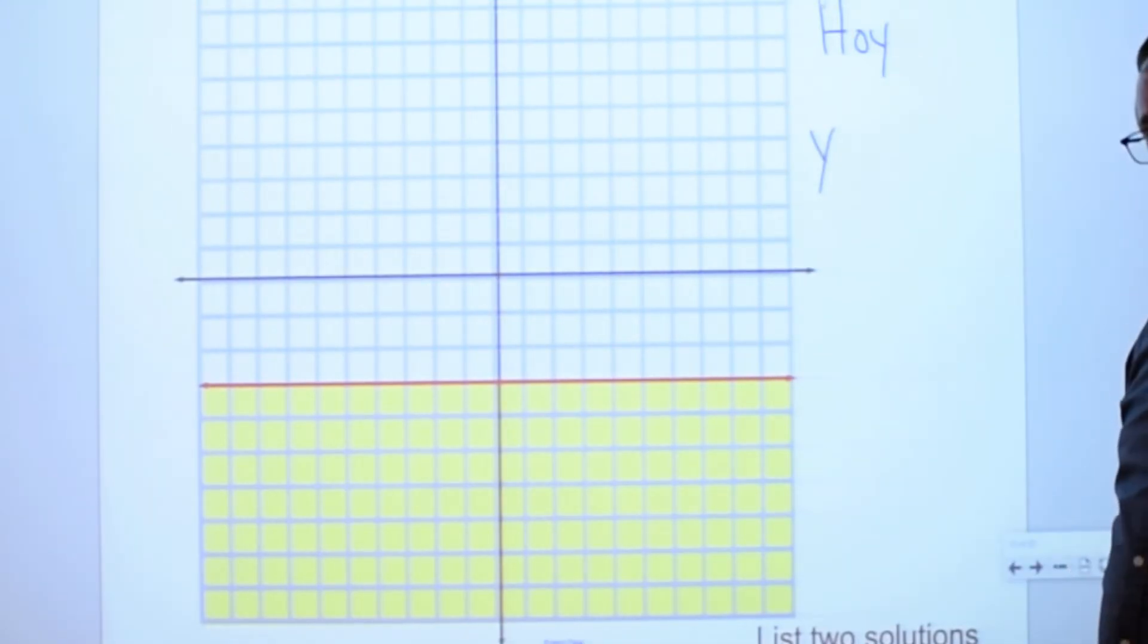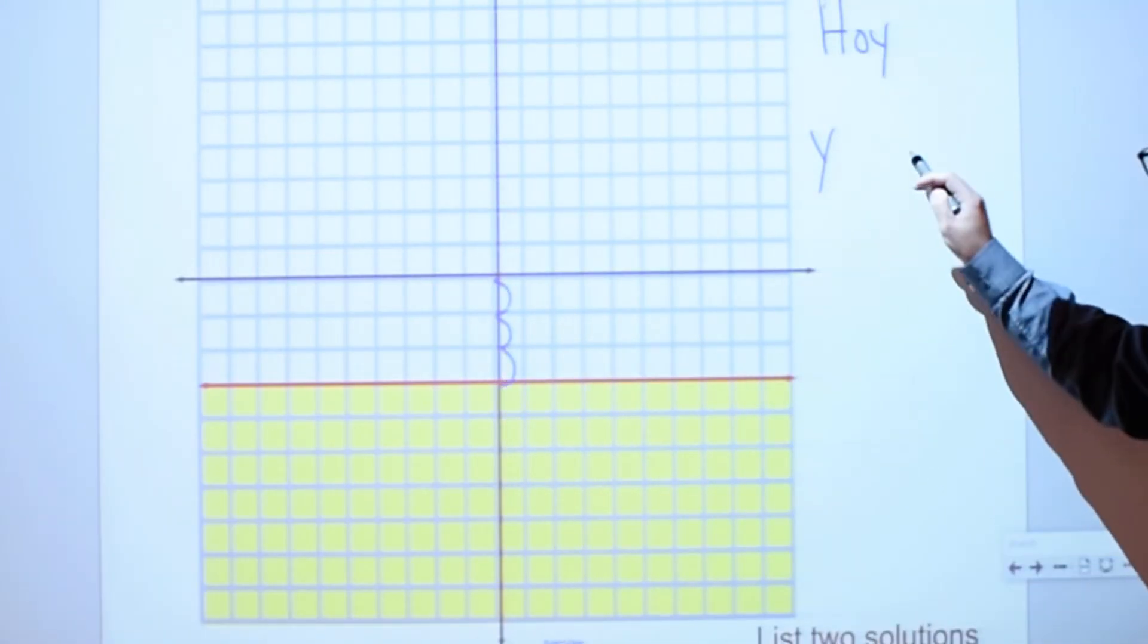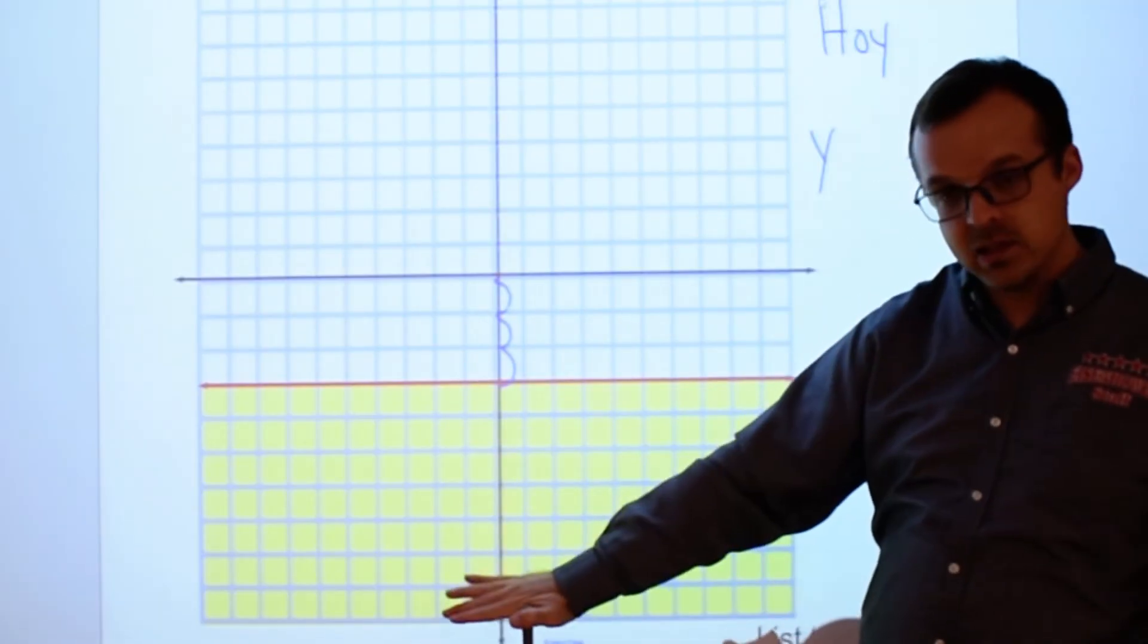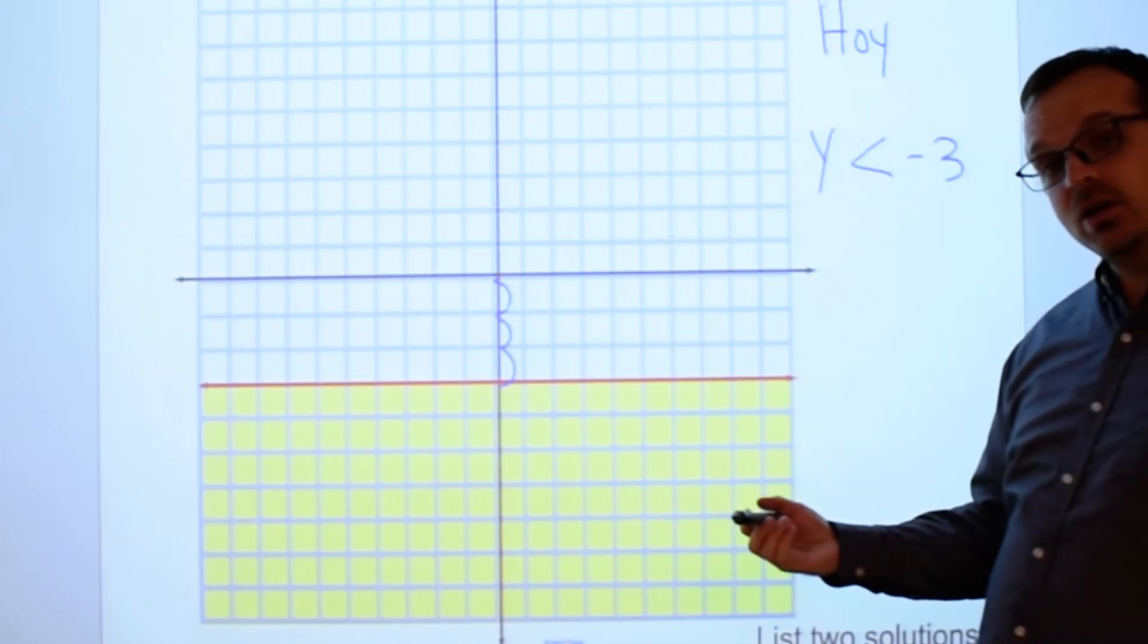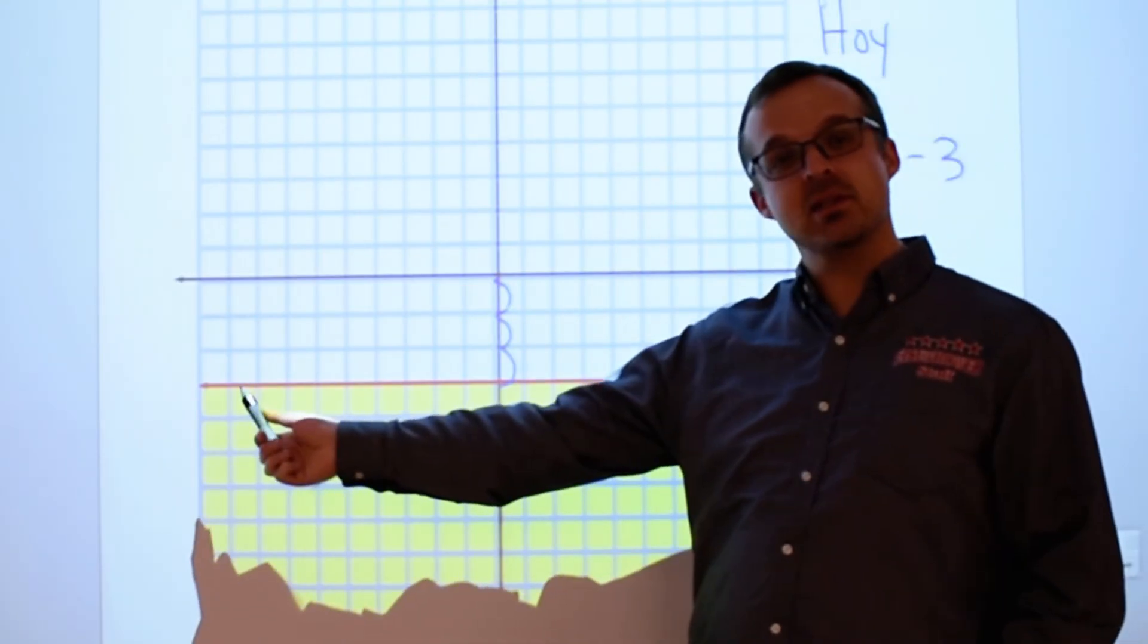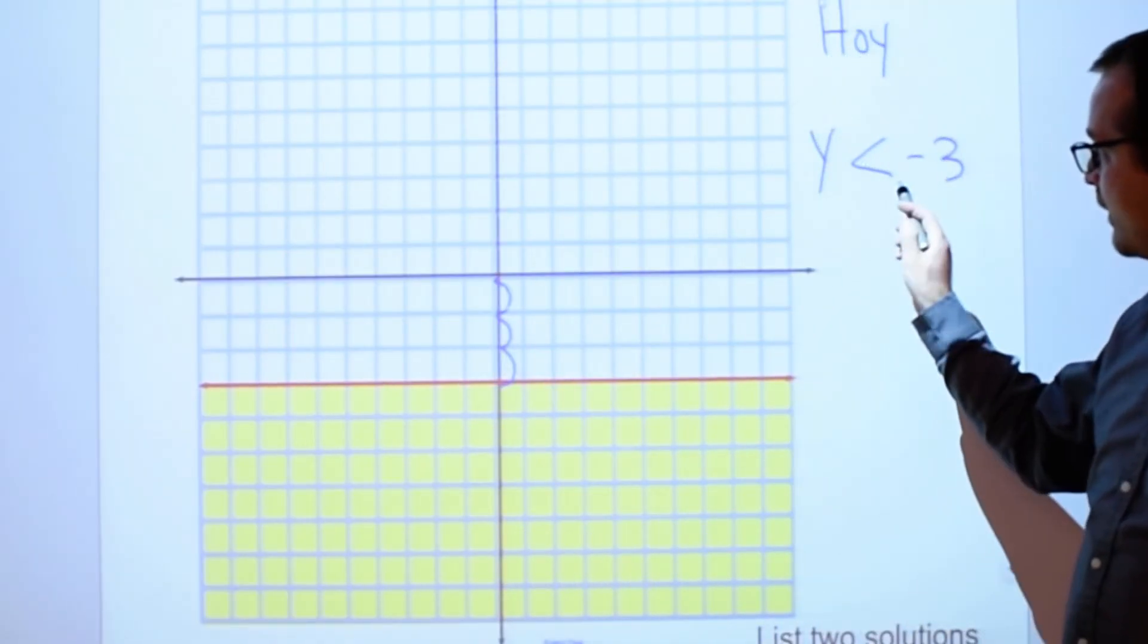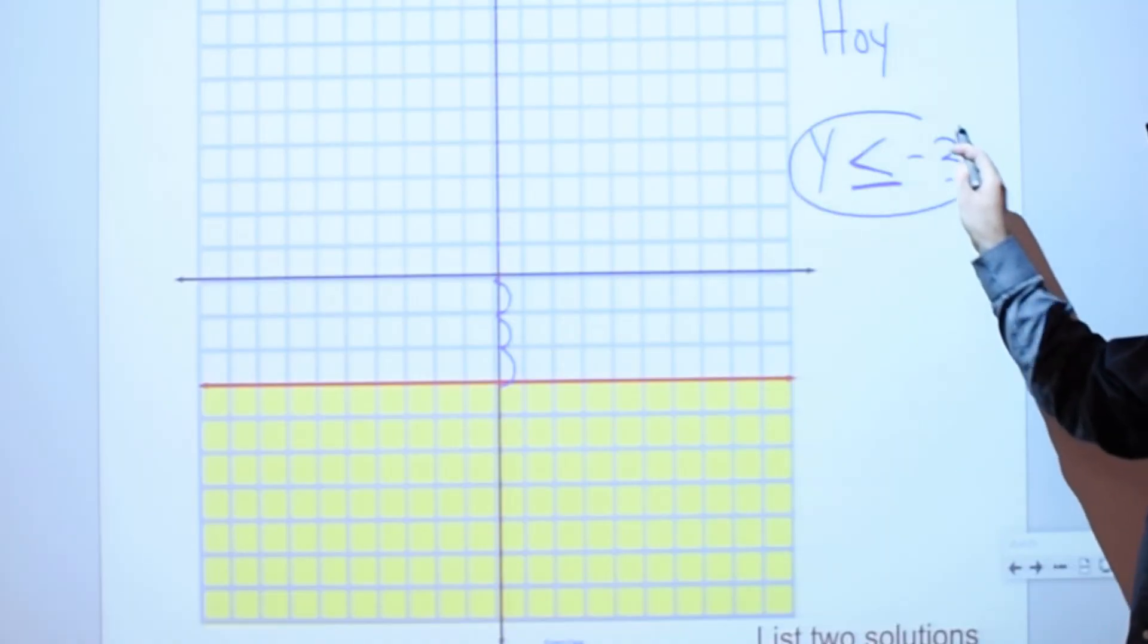Hoy means it has just a y in the equation. And it looks like we're down here at negative 1, negative 2, negative 3. And it's shaded below the line. And below is going to be where the lesser numbers are. So y is going to be less than. But also, we have a solid line. That means the solutions are on the line as well. They are included. And so we have to put this equal to sign here to show that they are included. So y is less than or equal to negative 3 would represent this inequality.